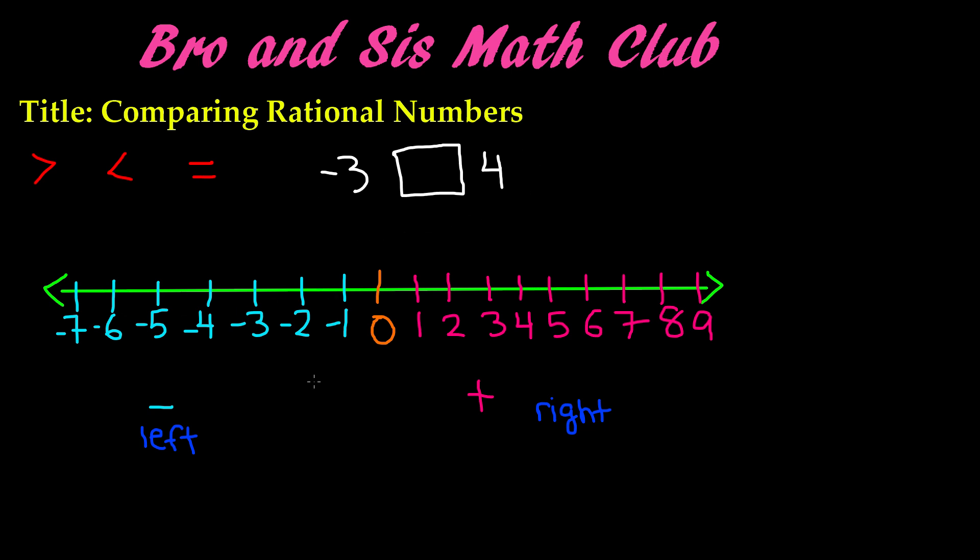Now if we apply that same logic to this problem, we see that negative three and positive four. We have negative three over here and positive four over here. Positive four is to the right side of the number line, and negative three is to the left. If it's to the right side, that means it is greater in value. That tells us that four is actually greater than negative three, or negative three is less than four. That is how you compare integers.